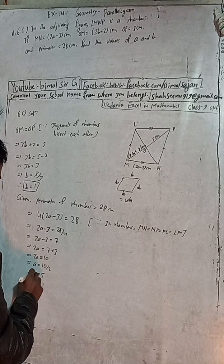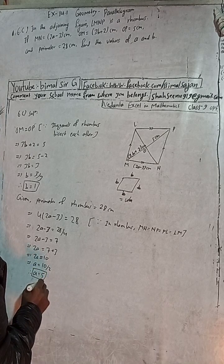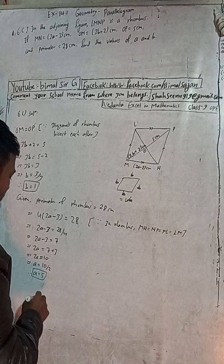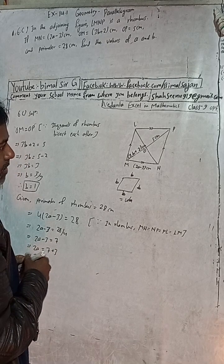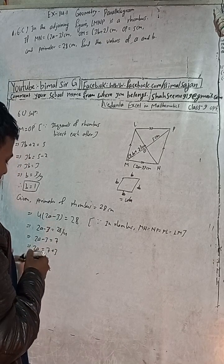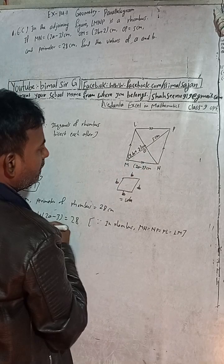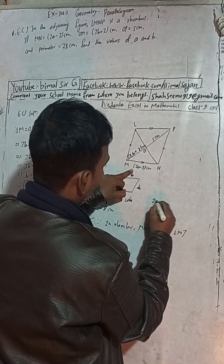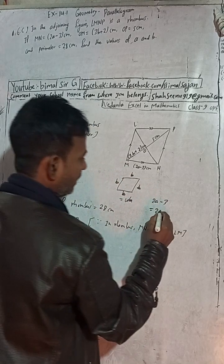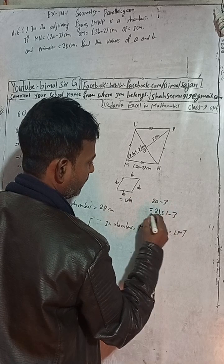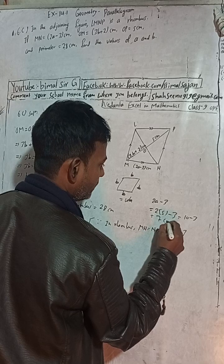We got A equals 5. The value of A is 5 and B is 1. We can verify: 2 times 5 minus 3 equals 10 minus 3 equals 7 CM, which checks out with our perimeter of 28 CM.